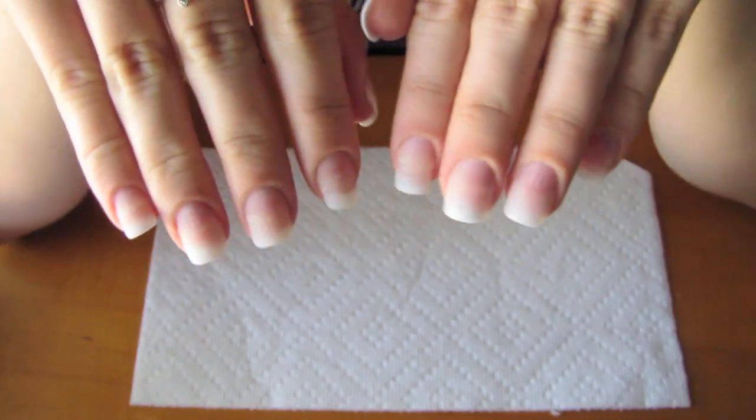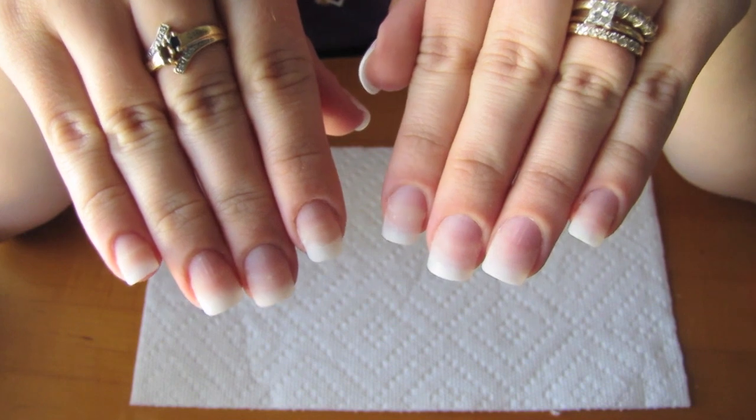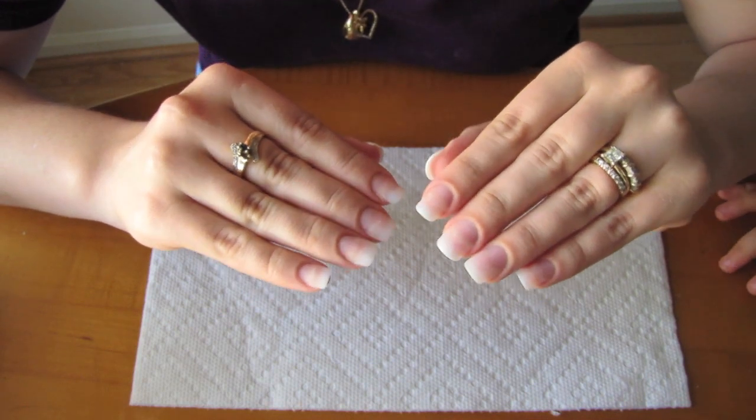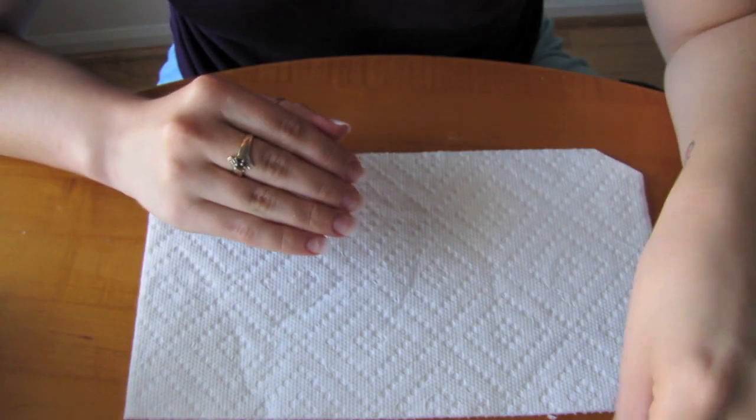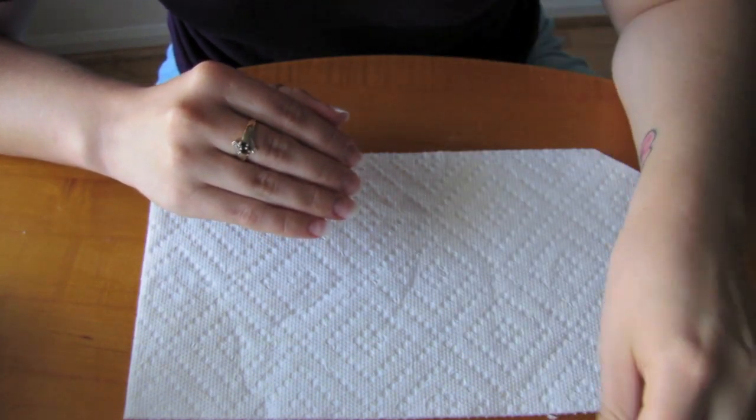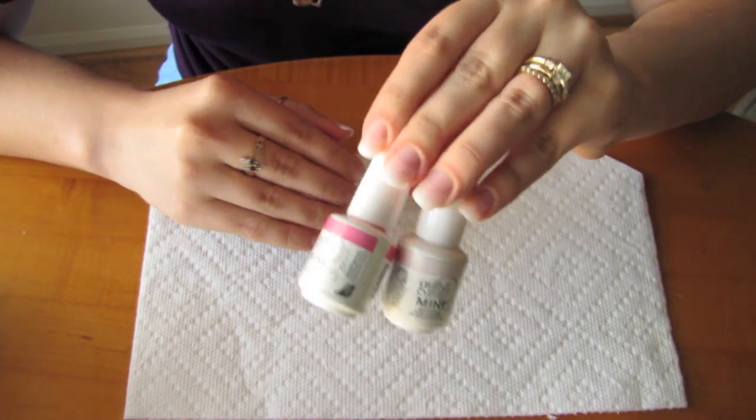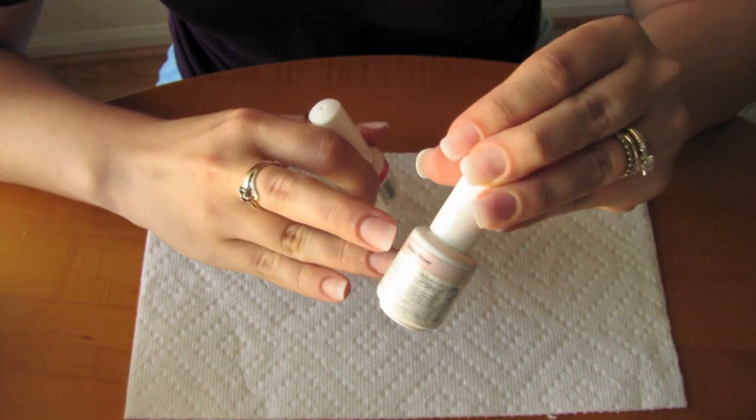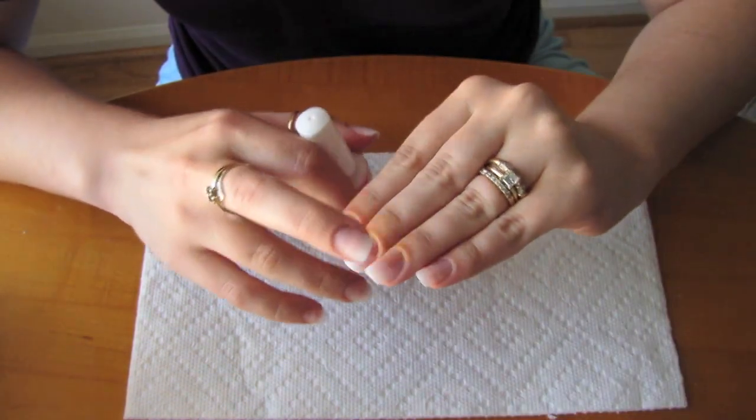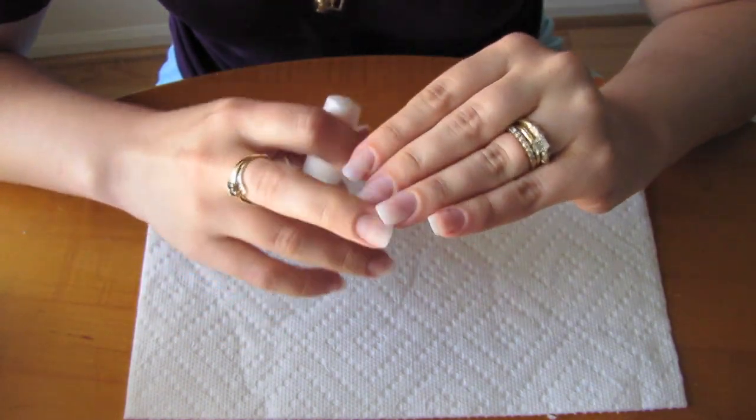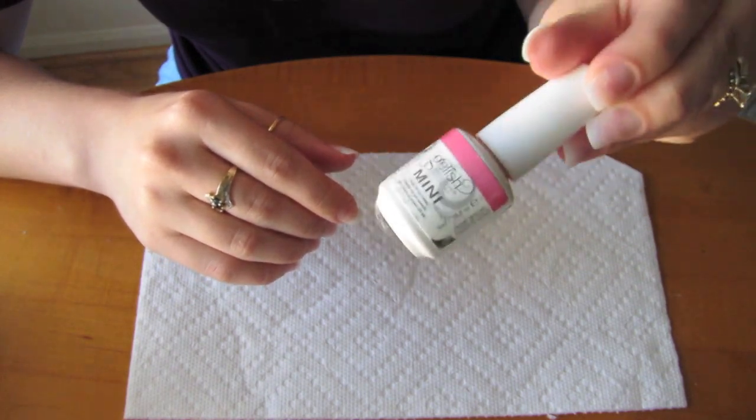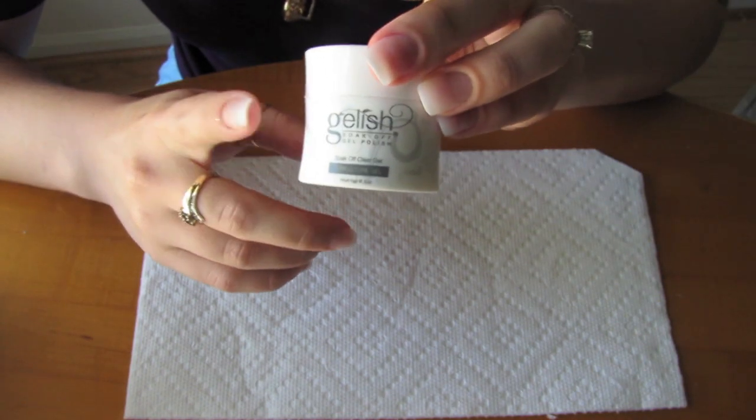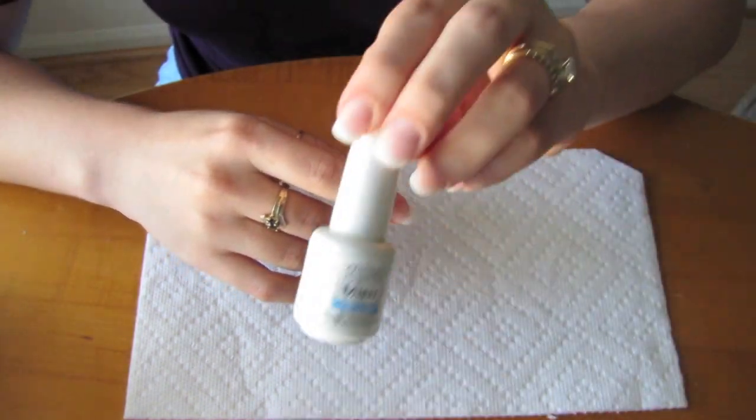So now I've filed down the edges and buffed them smooth. I've also filed them to the length and shape that I want. Now I'm ready to apply the Gelish manicure. I'm using Gelish in place of acrylic or traditional gel. What you'll need is the pH bond, the foundation, your choice of colors. I'm going to use the Simple Sheer because it's an almost clear polish and I want to keep it pretty natural so I can polish over it. But you could also use one of their colors or the Structure Gel which just adds thickness. And then you'll need the Top It Off.